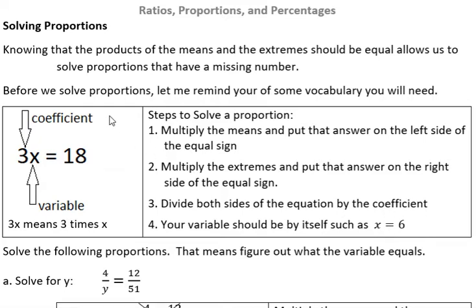Okay, steps to solve a proportion. Multiply the means and put that answer on the left side of the equal sign. Multiply the extremes and put that answer on the right side of the equal sign. That's what we were doing a minute ago to see if things were equal.